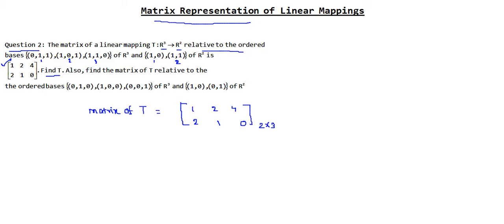Because we have the ordered basis (0,1,1), (1,0,1), (1,1,0), it means that if I write T of (0,1,1) as a linear combination of the vectors (1,0) and (1,1), then the first column of the matrix gives the coefficients: 1 will be the coefficient for (1,0) and 2 will be the coefficient for (1,1).